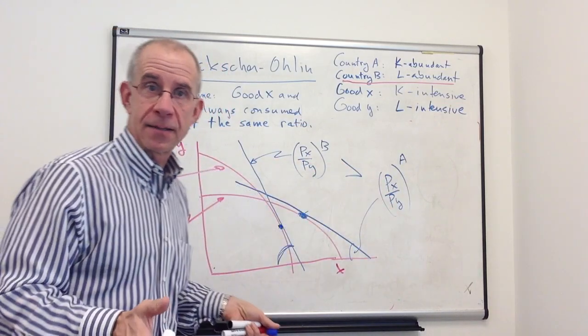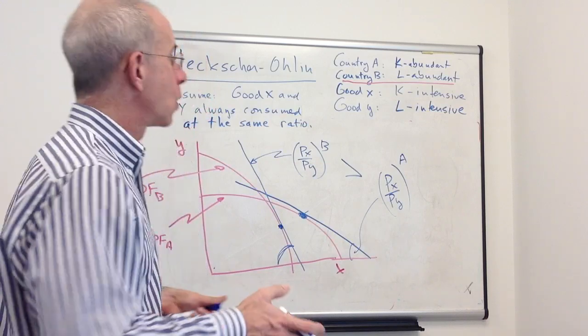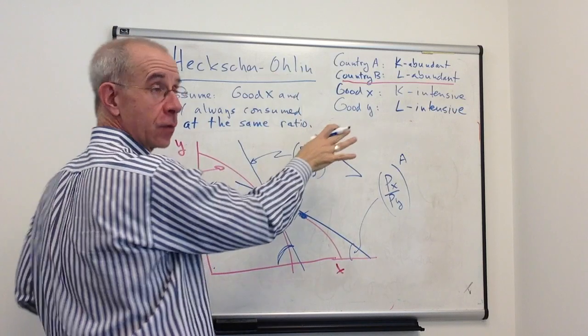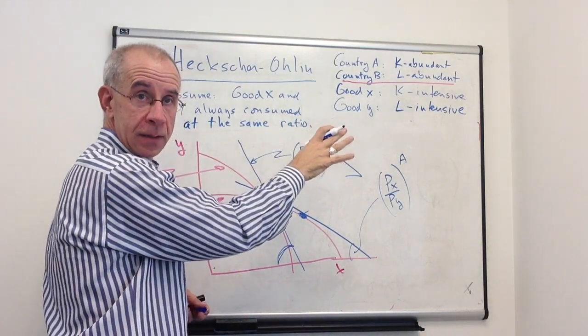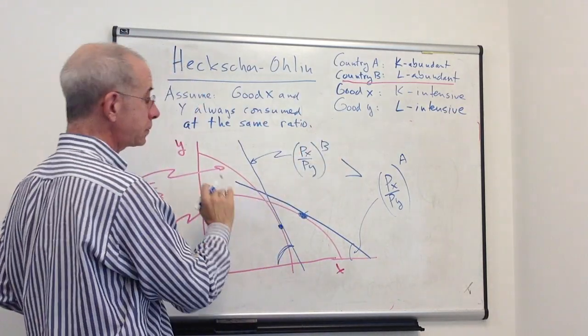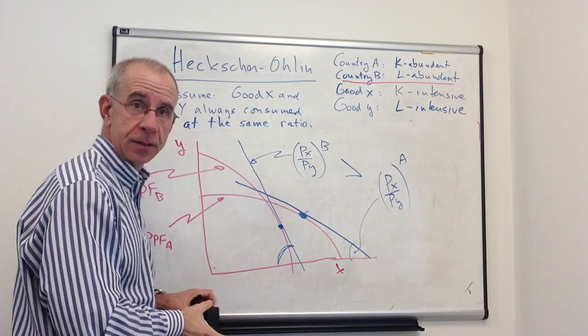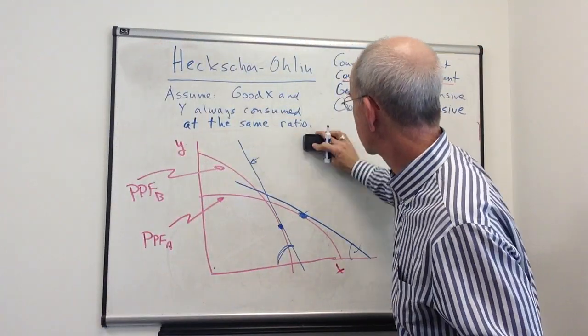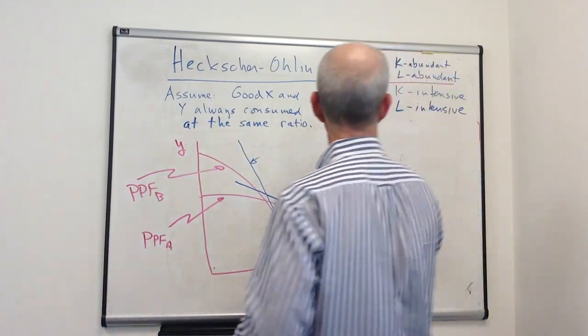So that's really Heckscher-Ohlin. We've got different relative factor endowments, different relative intensities of the goods, and we have this predictable comparative advantage. Let me write this Heckscher-Ohlin result down.